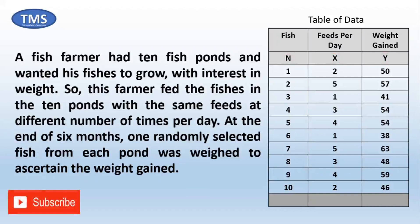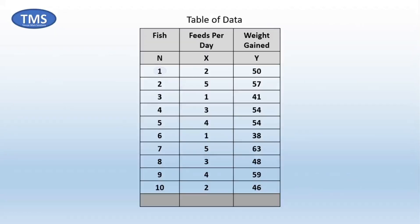Looking at this table of data, the conditions for performing Pearson's correlation, as stated in the earlier video, are hereby satisfied. You might be tempted to say the weight gained by the fishes was caused by the feeds per day, but that statement is inappropriate because the fishes responded differently to the feeds — not necessarily to the number of times the feeds were given per day. For example, the first and the tenth fish were fed twice per day each but had different amounts of weight gained. Similarly, the second and seventh fish were fed five times each per day but also had different amounts of weight gained. Rather than say the weight gained was caused by the feeds per day, you can say there is a relationship between the feeds per day and the weight gained, because correlation analysis is not a causal effect.